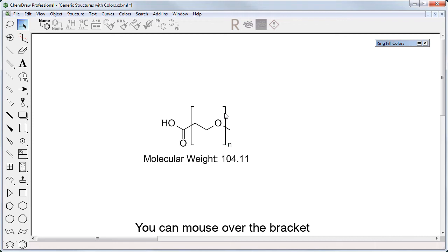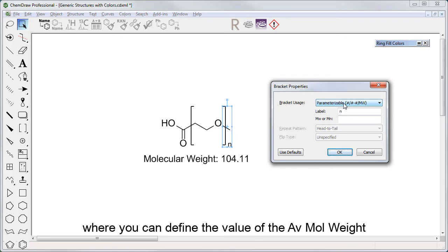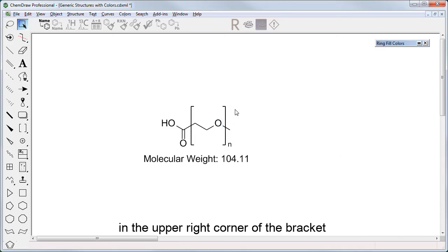You can mouse over the bracket and press slash, which will bring up properties windows where you can define the value of the average molecular weight for the part of the structure between the brackets. You can also right-click over the text field in the upper right corner of the brackets and modify its value there.